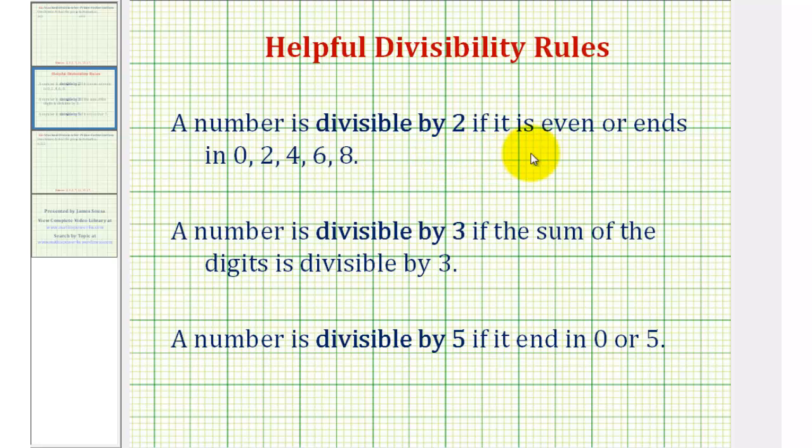A number is divisible by two if it is even, which means it ends in zero, two, four, six, or eight. The second rule to me is probably the most valuable divisibility rule of all of them. A number is divisible by three if the sum of the digits is divisible by three.